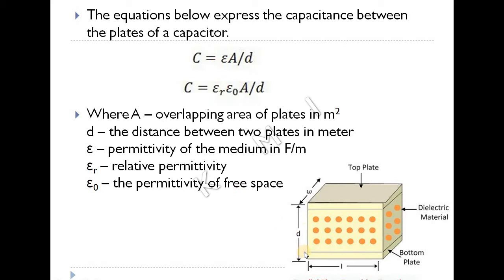This is the area of cross-section, the overlapping area of the plates. So there are three different variables that can be changed in a capacitive transducer.